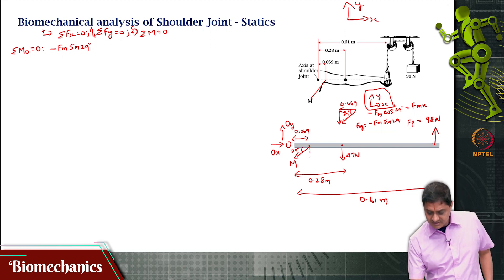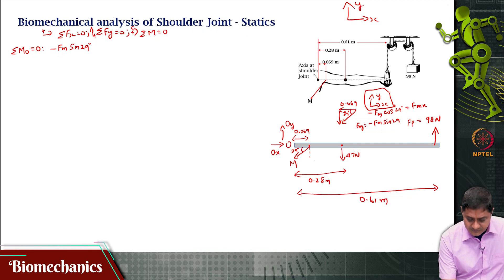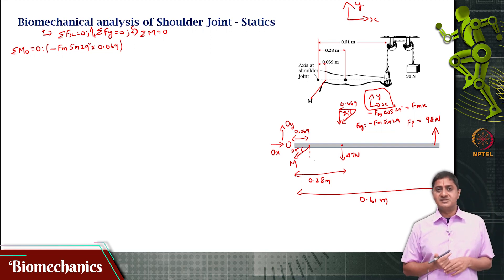So, that would be this, that will cause a clockwise moment, because of that reason it will be a negative moment, because we said counter clockwise is considered positive. So, minus fm sin 29 times 0.069, that is the moment that is caused by this vertical component.